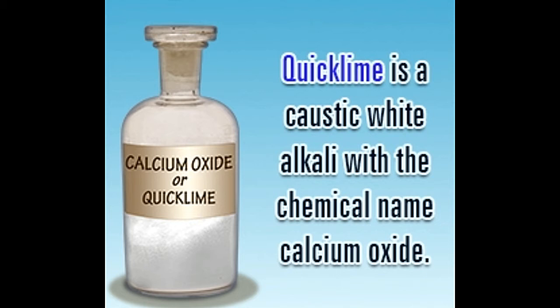The term 'lime' is commonly used to denote all calcium-based inorganic substances. Actually, there are two types of lime: quicklime and slaked lime. The name quicklime comes from the property of the substance to react vigorously or quickly with water. Being highly caustic in nature, it is said to have a thirst for water. So when water is added to quicklime, this thirst gets quenched or slaked, and hence slaked lime is formed.